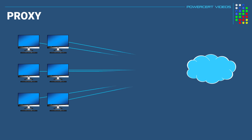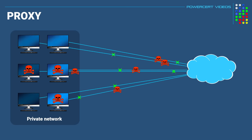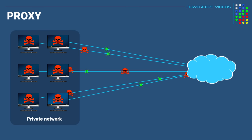Here we have a private network with a bunch of computers or clients. Now all of these computers have access to the internet. But as most of us know, with all of these computers having the ability to access the internet, it could also create a massive security concern, because they could draw in malicious traffic that could wreak havoc inside this network.